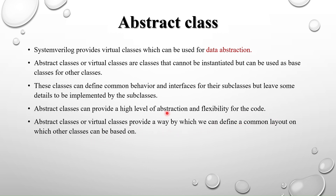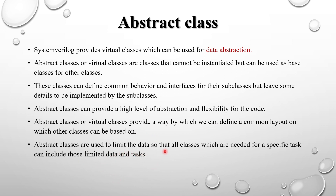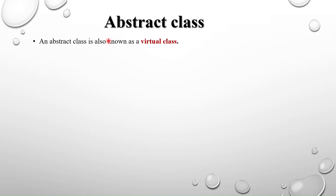Inside the abstract class we write the common behavior — methods which we can implement in the subclasses. It provides a common layout on which other classes can be based on. Because it provides only the essential information and hides implementation, that implementation can be seen in the subclasses. Abstract classes are used to limit the data so that all classes needed for a specific task can include those limited data and tasks. Since the abstract class can only be derived, all derived classes for a specific task include those limited data and tasks present in the abstract class.